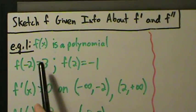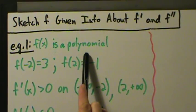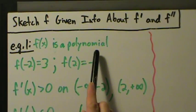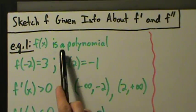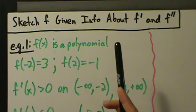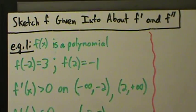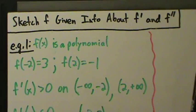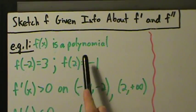Example one: first of all we're given that f of x is a polynomial, and that's really helpful for us because it tells us that the graph of f of x is going to be smooth and continuous — no holes, discontinuities, asymptotes, breaks, jumps, and there are also no sharp points anywhere.